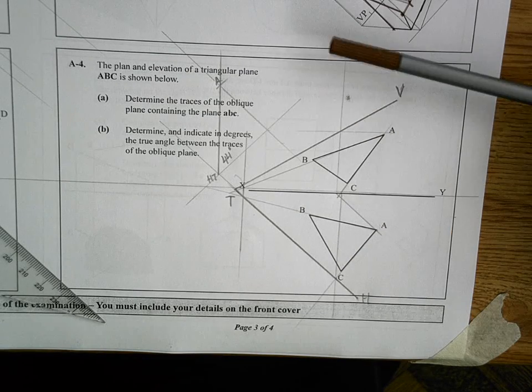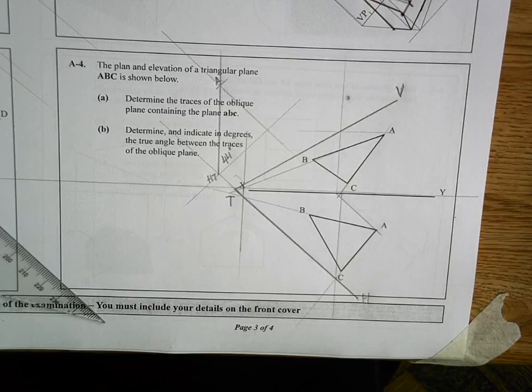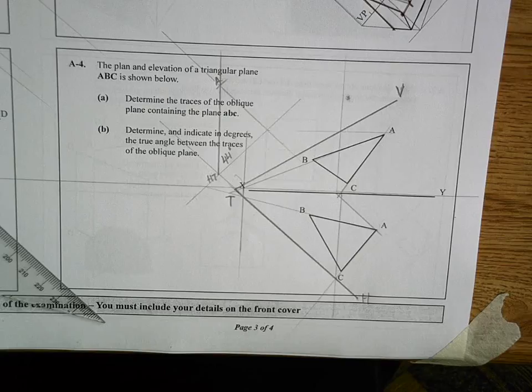What we're asked first of all is to draw the traces of that plane. So the first trace you should always draw is the horizontal trace, that's the one that's on the ground. In order to do that, you need two points on the ground and just join them together.